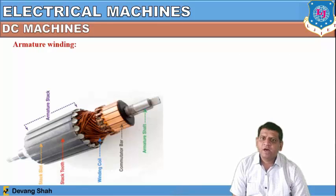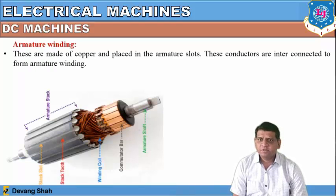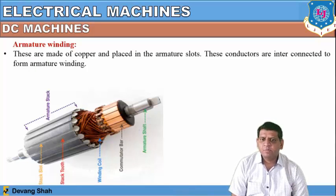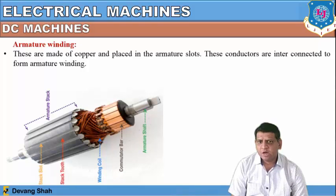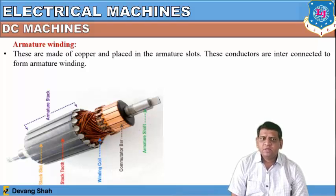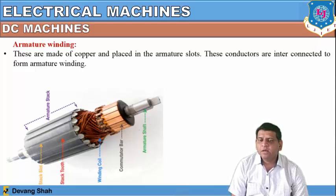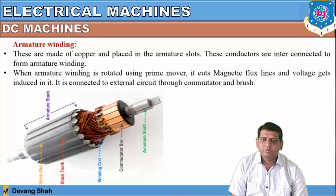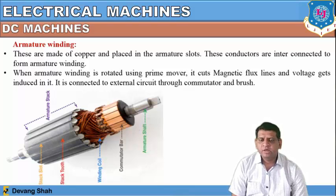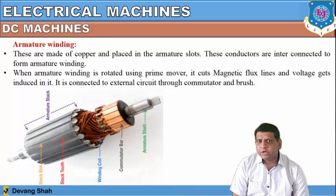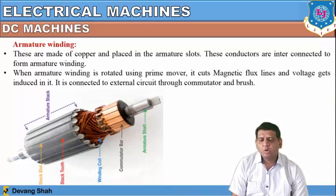Next is the armature winding. It is made up of copper and placed in the armature slots. These conductors are interconnected to form the armature winding. When the armature winding is rotated using the prime movers, it cuts magnetic lines and voltage gets induced in it — this is Faraday's law of electromagnetic induction. It is connected to the external circuit through a commutator and brush.